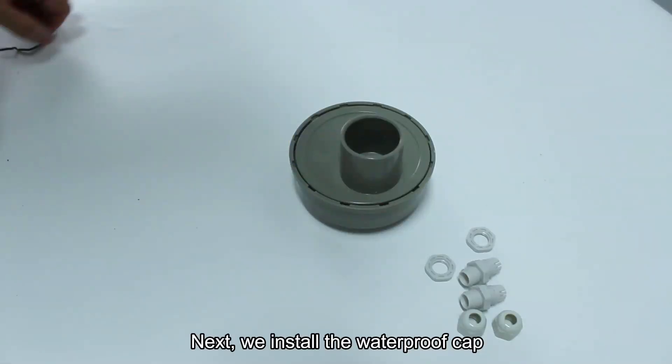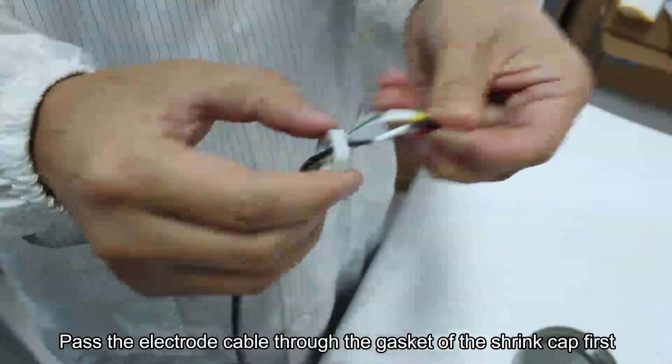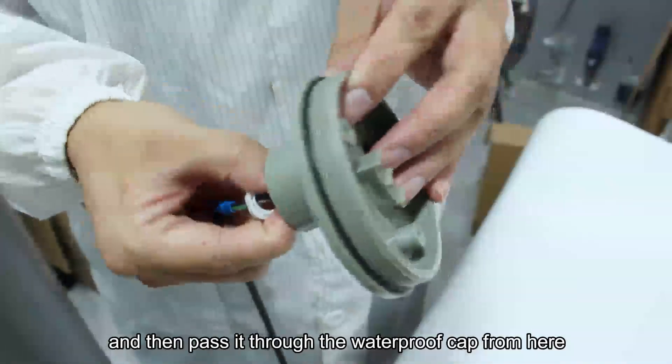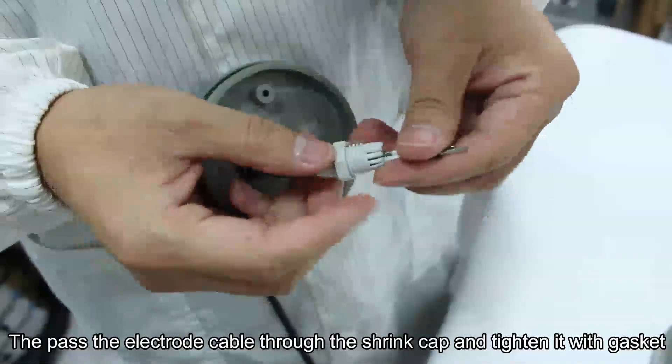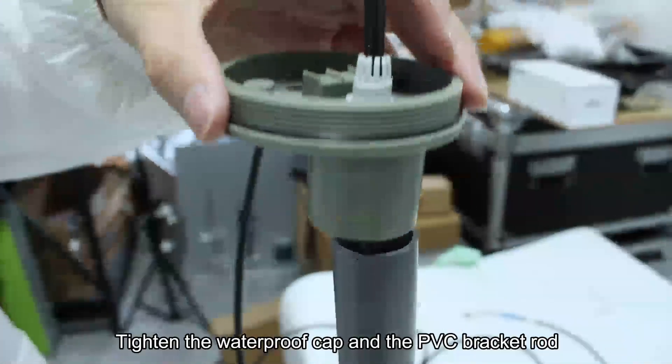Next, we install the waterproof cap. First, unscrew the waterproof cap. Pass the electrode cable through the gasket of the shrink cap first, and then pass it through the waterproof cap. Then pass the electrode cable through the shrink cap and tighten it with gasket. Tighten the waterproof cap and the PVC bracket rod.